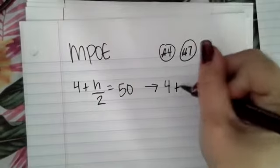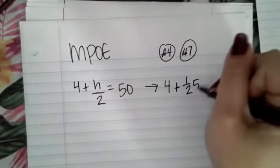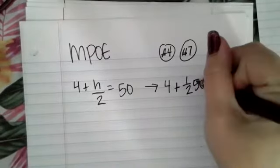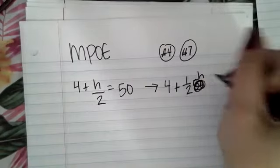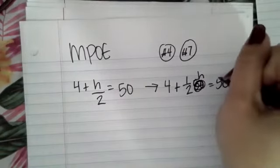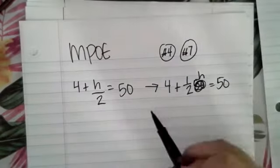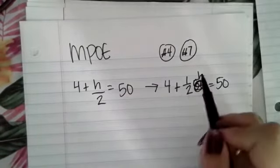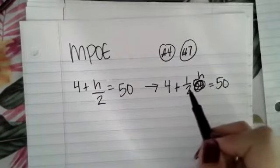This is the same thing as 4 plus one half H equals 50. Because when we divide by 2, it's the same as taking half of something. So you can rewrite it like this.